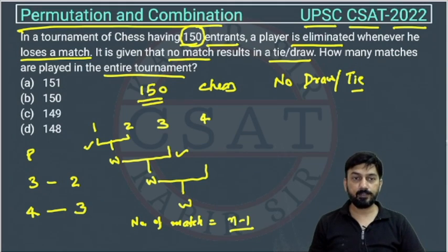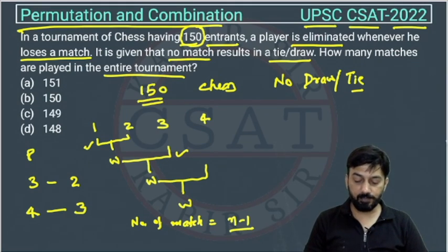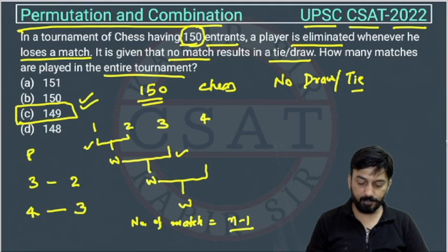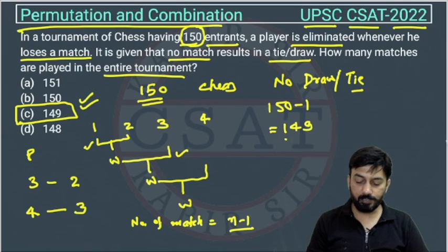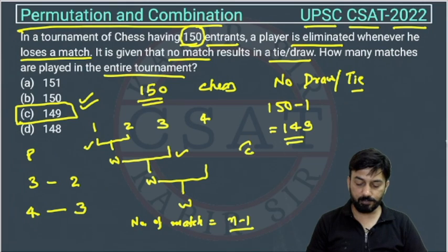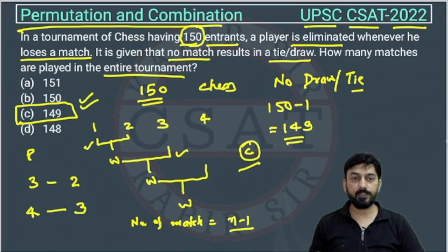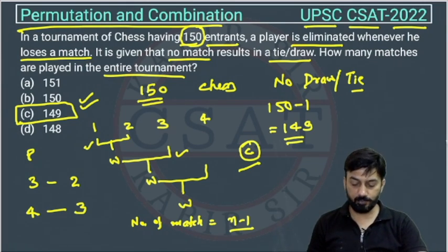So the matches will be 150 minus 1, which equals 149. The total matches are 149, and the answer is option C. This is a very easy question — you just need to know the concept.